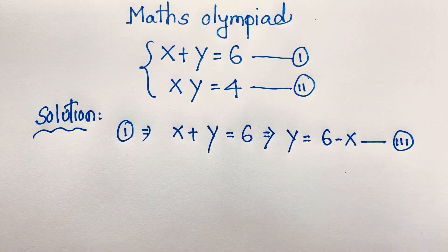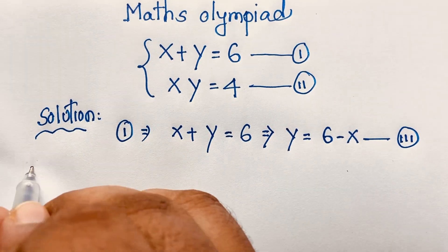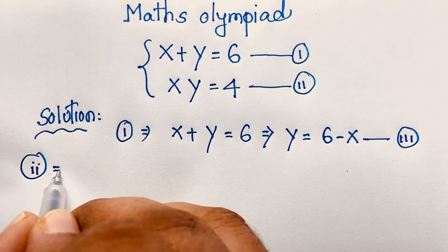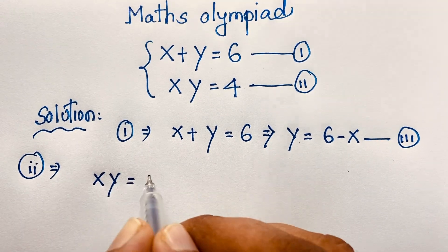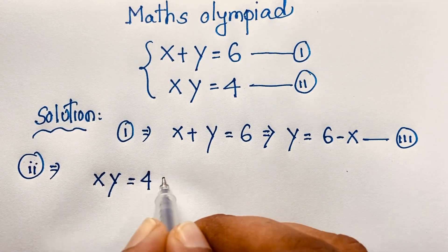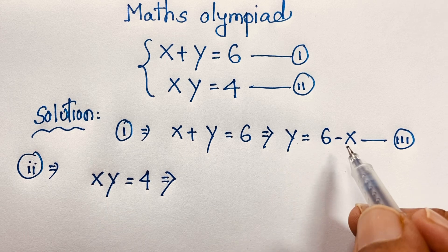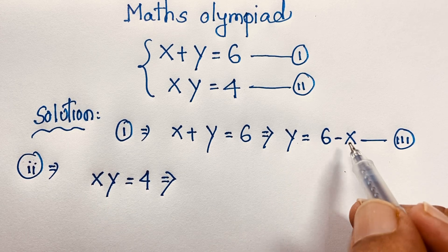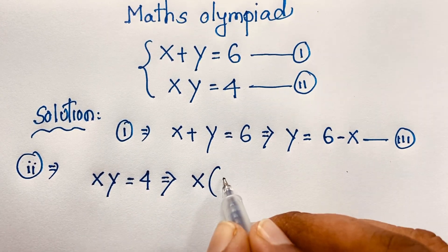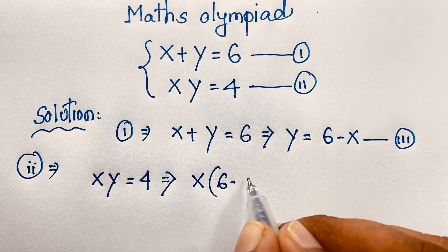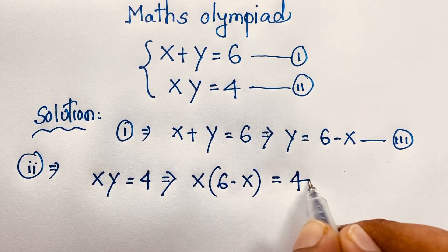Now I take our second equation. Our second equation is xy is equal to 4. Recall that y is equal to 6 minus x, so I put this value here. It will be x times (6 minus x) is equal to 4.